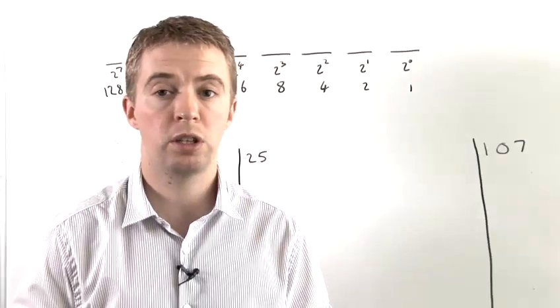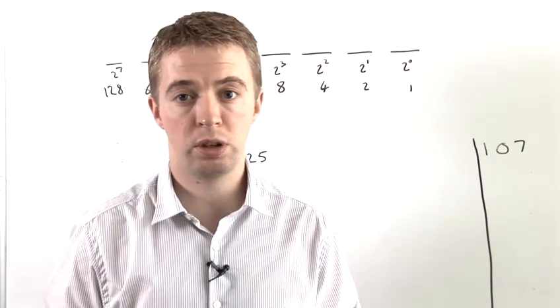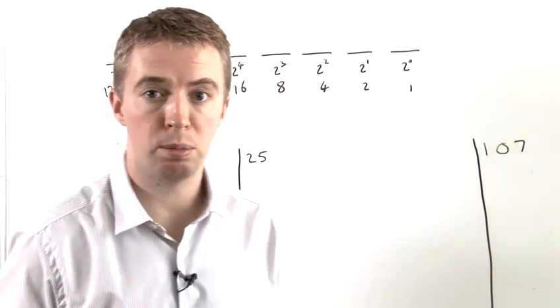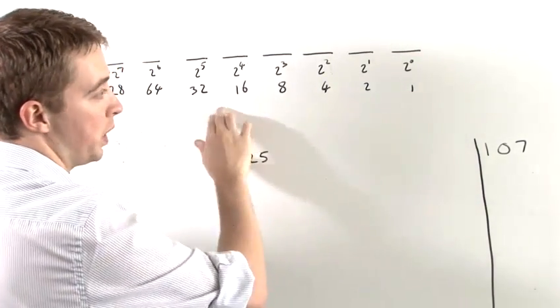We're now going to look at converting a decimal number into a binary number. So the first thing to do is to understand what a binary number is. A binary number represents powers of two, basically.